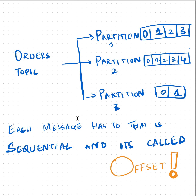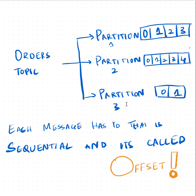Let's take an example of how partitioning works. Just as we partition tables in database systems to manage them effectively, we can similarly partition topics in Kafka. Let's say we have an orders topic and we store it into three different partitions. A producer can predetermine which partition it has to write to and then writes to that specific partition. In this way we can effectively manage reading and writing. You don't have to scan all messages - if you have three partitions and know which one to read from, you target that specific partition instead of looking through all messages.